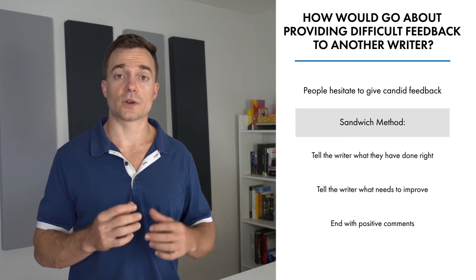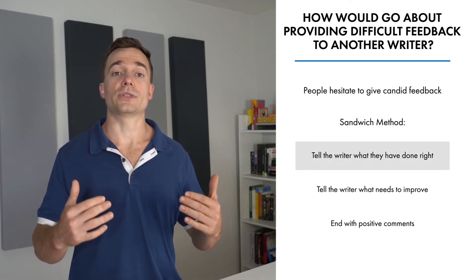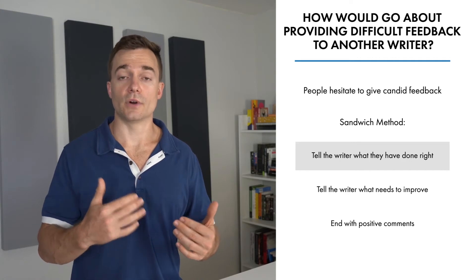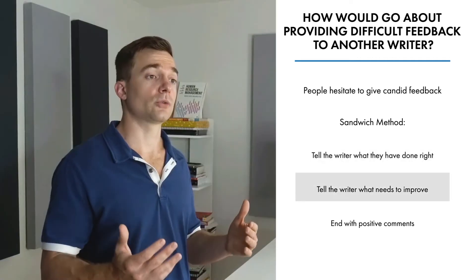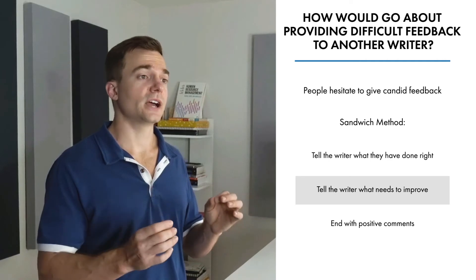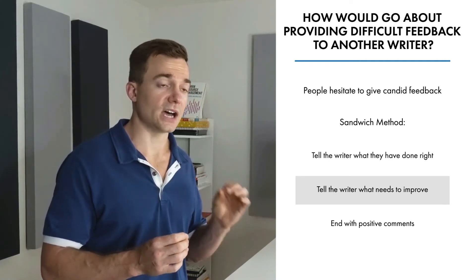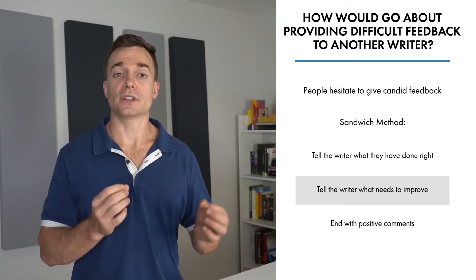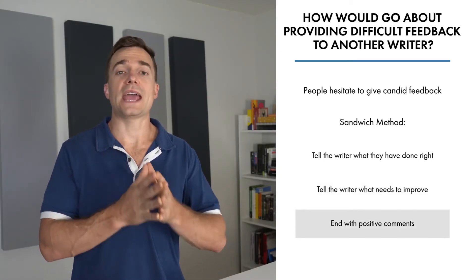The main message or feedback is sandwiched between positive comments. Using the sandwich method for feedback, you would tell the writer what they have done right and the importance and value of what they have done right. You'd also tell the writer what needs to improve. One thing to note here is that only telling the writer what needs to improve is not sufficient. You should also tell the writer how to make the required improvements. If you're not sure, then just be candid about your lack of clarity there. You also always want to end with positive comments about the work done by the writer.